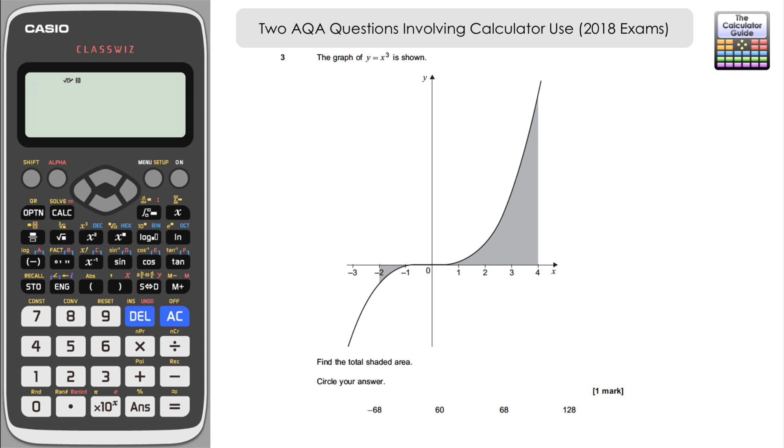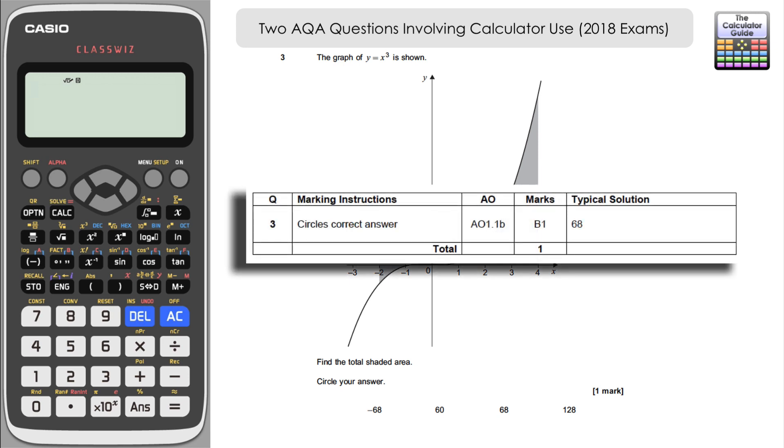As it's only one mark there's an expectation for you to use your calculator to be able to do this. In fact, if we have a look at the mark scheme you can see that you only get marks for circling the correct answer. The correct answer being 68.